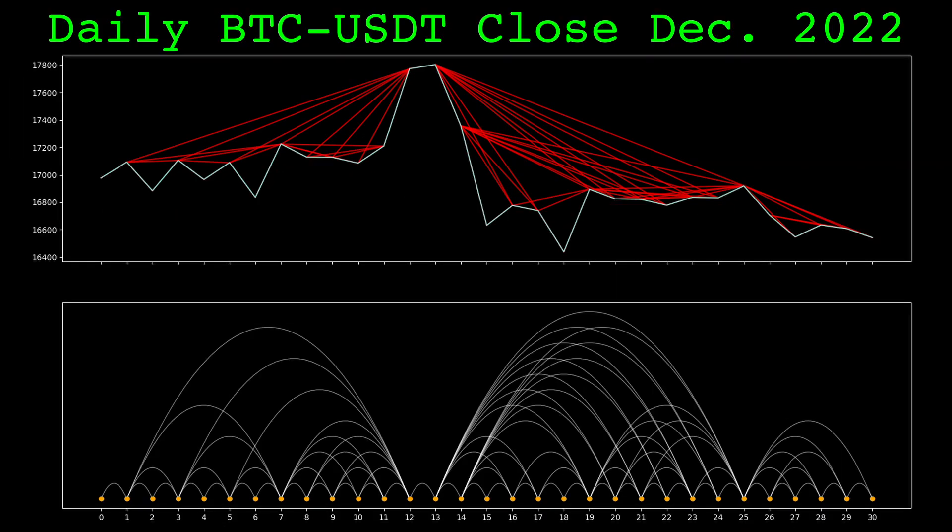Here is the visibility graph of daily Bitcoin data in December 2022. Something important to note, all the visibility lines are above the price. So the resulting graph contains information about which prices are visible from higher prices. This seems like only half the story, what about the lower prices?